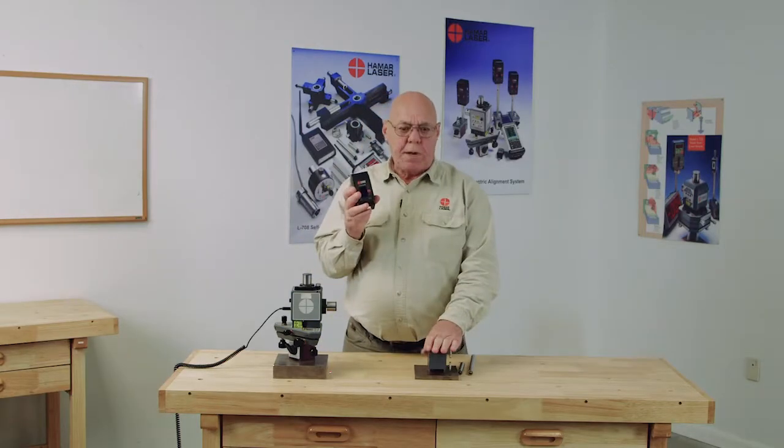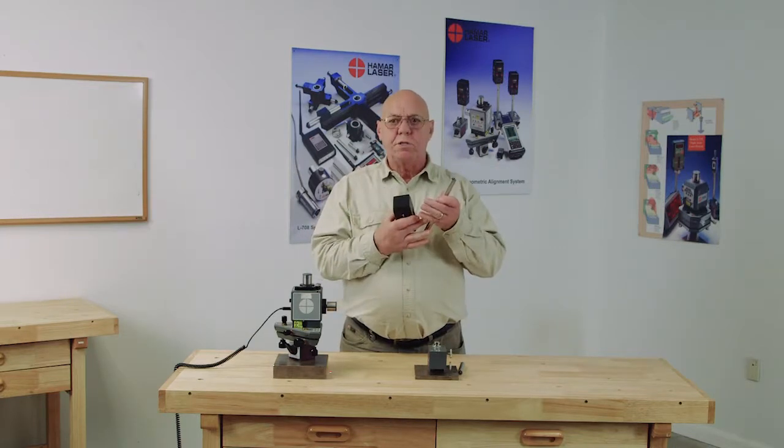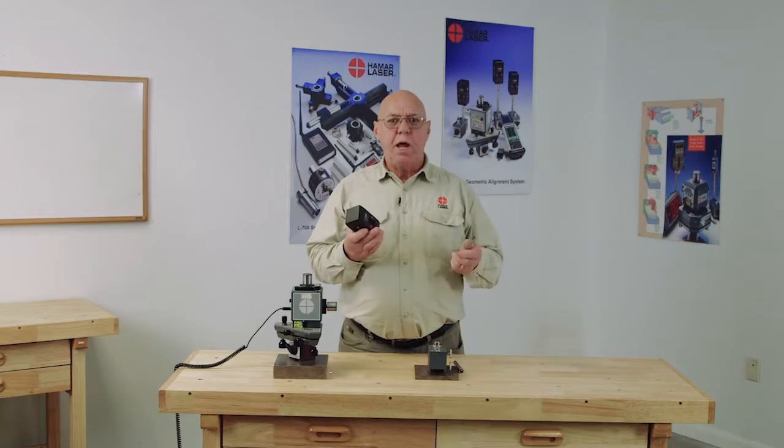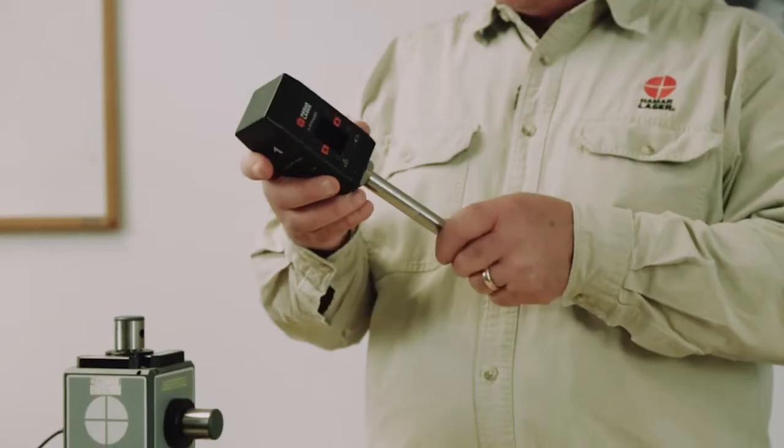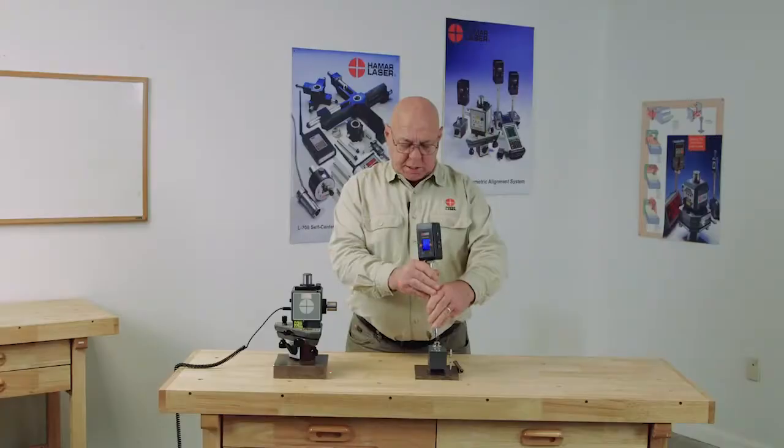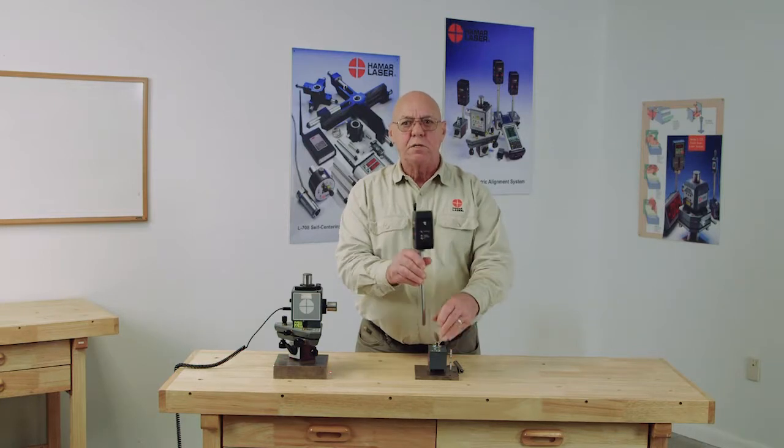This target comes with a magnetic base and a set of rods. What I mean by a set of rods, we have one about six inches long, one about four inches long, and one about two and a half inches long. These rods will screw into the bottom of this target. We can set this in the base and adjust the height of the target into the laser beam.